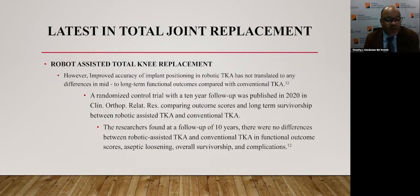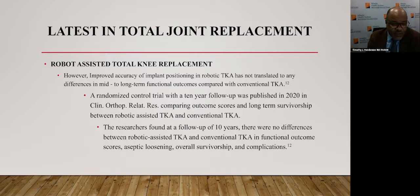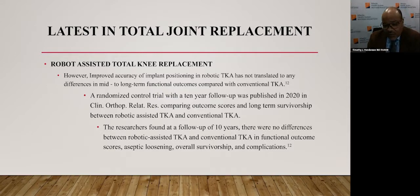However, improved accuracy of implant positioning in robotic TKA has not translated into differences in mid- to long-term functional outcomes compared to conventional TKA. A randomized control trial with 10-year follow-up published in 2020 in Clinical Orthopaedics and Related Research compared outcome scores and long-term survivorship between robotic-assisted TKA and conventional TKA. The research found that at 10 years, there were no differences in functional outcome scores, aseptic loosening, overall survivorship, or complications.